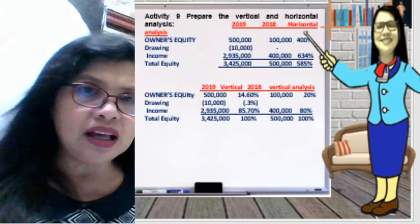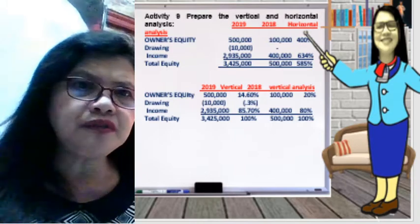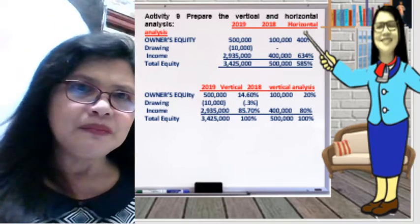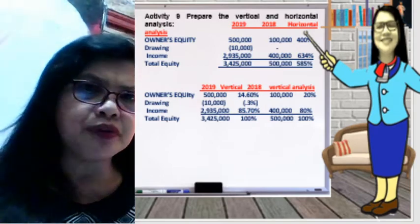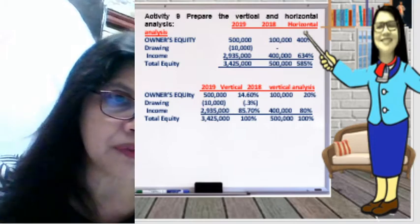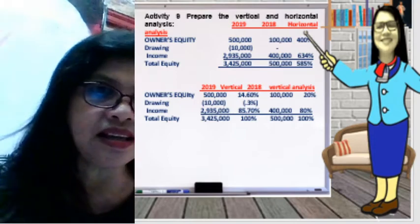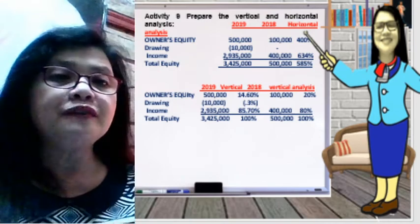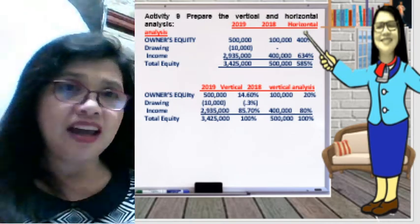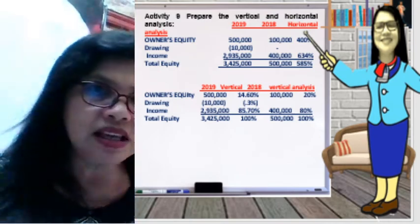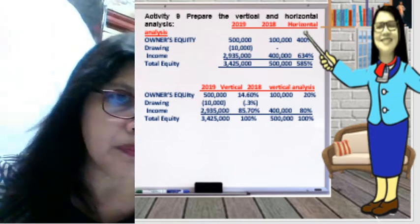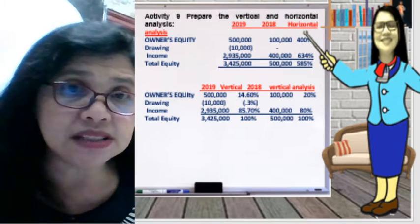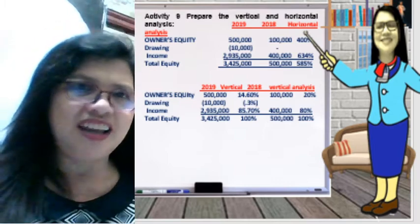The income account of 2,935,000 over total equity of 3,475,000 gives 85.70%. So the income is 85% of total equity. The income generated for 2019 is 85% of total equity, and the owner's equity is approximately 24.6% of total equity.